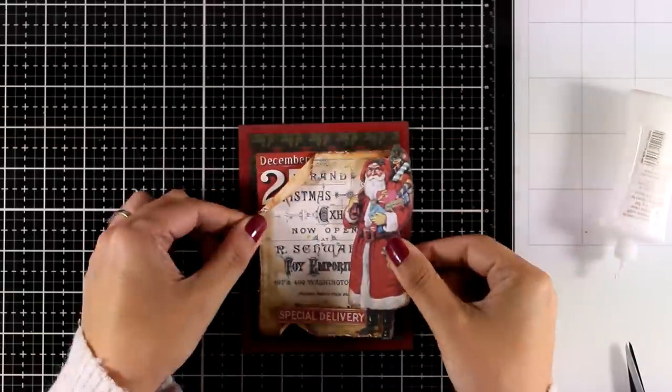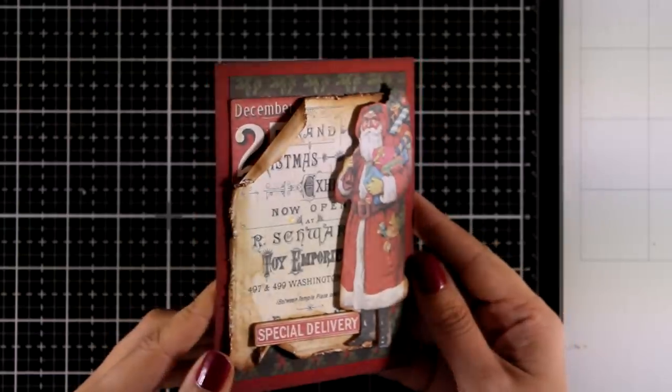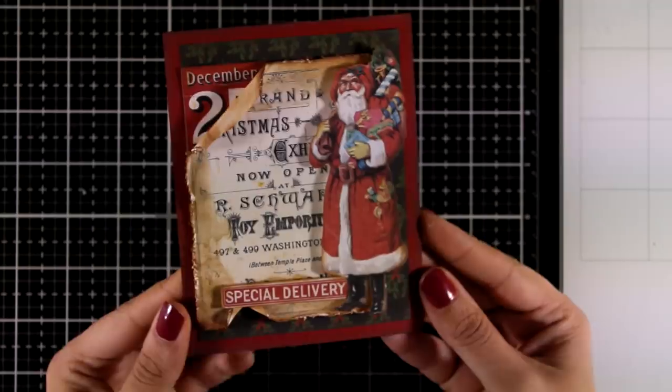Now I'm also going to add some glue at the back of the panel and put it in place as well. I think this card looks stunning. It looks complicated, but it was super easy to create just by putting little cutouts together.